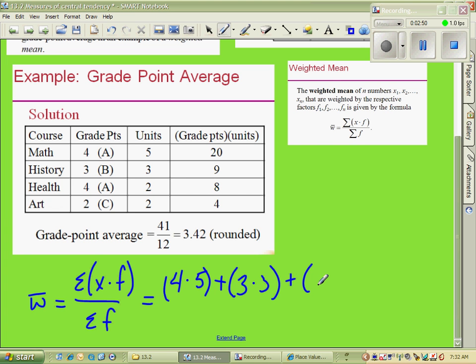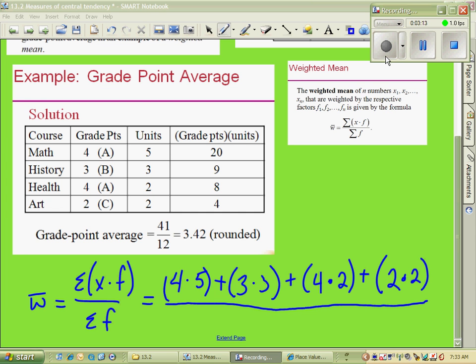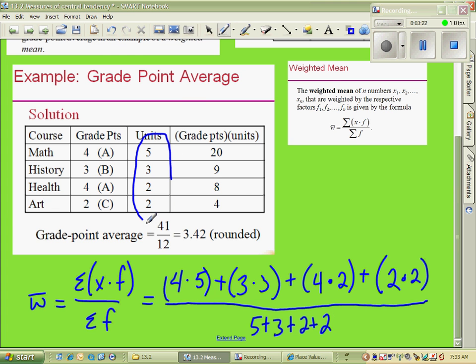Plus, in health class, we made an A. So that's a 4. It has a factor of 2. Plus, in art class, we made a C. That class has a factor of 2. All of that is going to be over the sum of the factors, which is 5 plus 3 plus 2 plus 2, which came from right here.